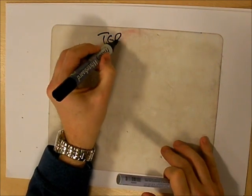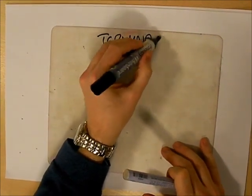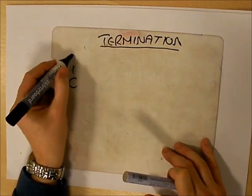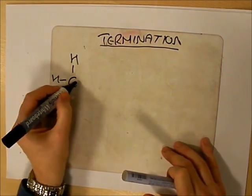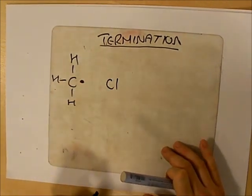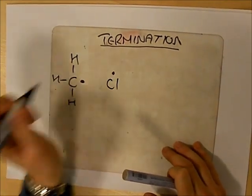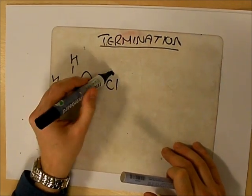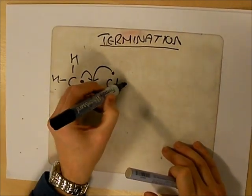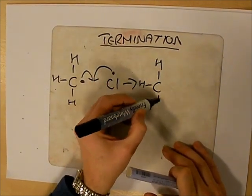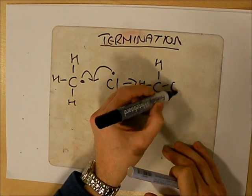The termination always involves the reaction of two free radicals. So I want to show the formation of my major product, which is chloromethane. This is where the bond is going to be, so my arrows need to go into the center. And that makes my major product chloromethane.